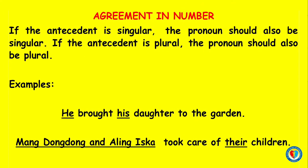Agreement in number: if the antecedent is singular, the pronoun should also be singular. If the antecedent is plural, the pronoun should also be plural. Example: 'He brought his daughter to the garden.' He is singular, and his is also singular. 'Mangdondong and Alimiska took care of their children.' Mangdondong and Alimiska is plural, and their is plural also.